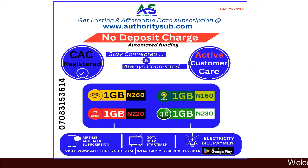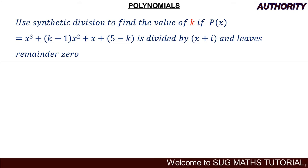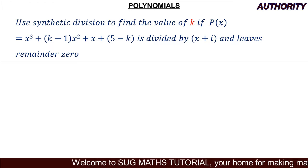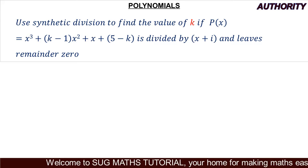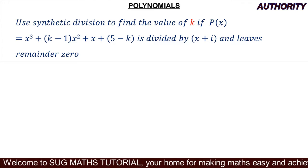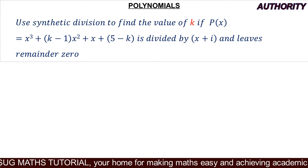Alright, welcome again. Today let's take a look at this question under polynomials. It says: use synthetic division to find the value of k, if x³ + (k−1)x² + x + (5−k) is divided by x + i and leaves remainder 0.